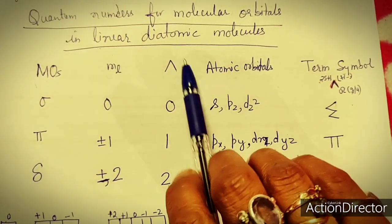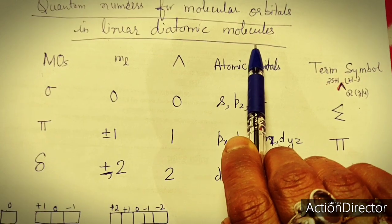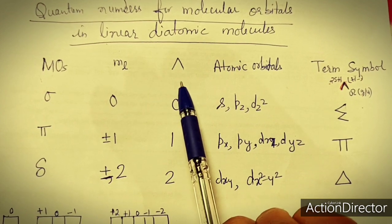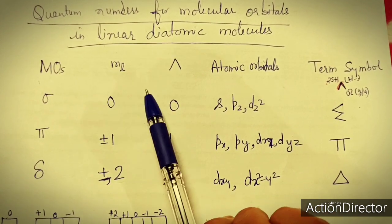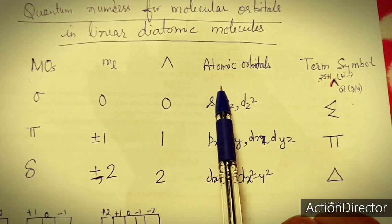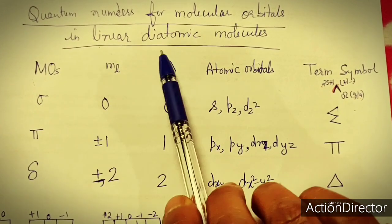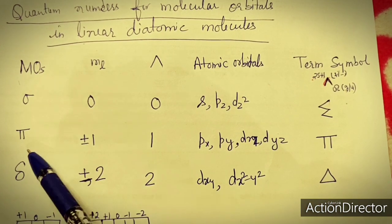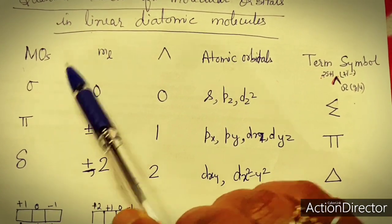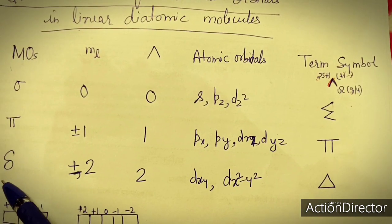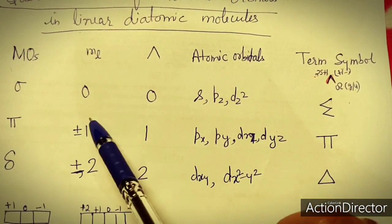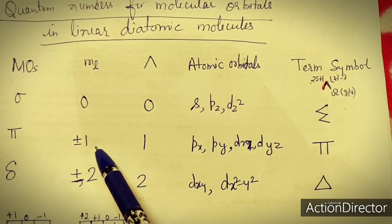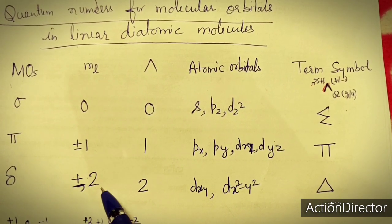These are the quantum numbers for molecular orbitals in linear diatomic molecules. There are three types: sigma, pi, and delta. The ml values are: 0 for sigma, +1 and −1 for pi, and +2 and −2 for delta. Atomic orbitals forming sigma MOs include S, Pz, and Dz²; pi MOs are formed by Px, Py, Dxz, or Dyz; delta MOs from Dxy and Dx²−y².